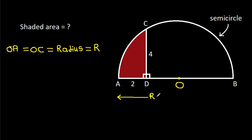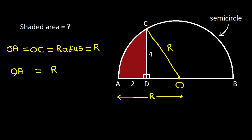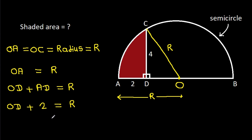So OA is R and OC is R. We have OA equals R, and OA equals OD plus AD, which is R. So OD plus AD is 2, giving us R. Therefore OD will be R minus 2.